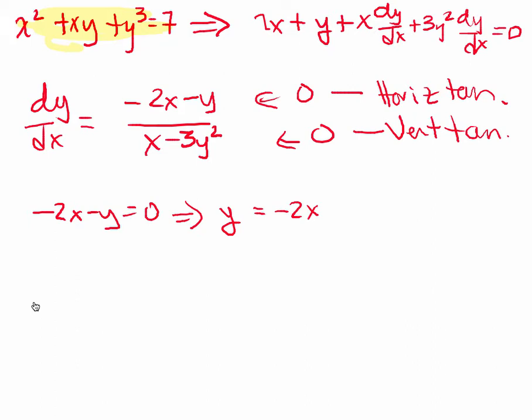We've got our equation of the curve that we want to put that specific y value into. And we'll get x squared minus 2x squared minus 8x cubed equals 7, which tells us that 8x cubed minus x squared minus 7 equals 0.